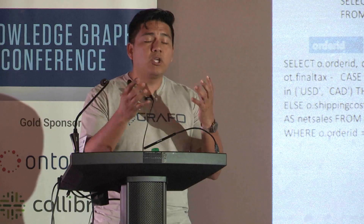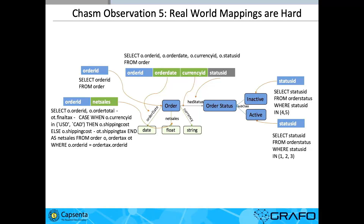Let's assume there's a table called order, and every instance of that table represents the concept of an order. Let's assume there's an attribute called date and currency — simple one-to-one mappings. But you also have to know that values four and five mean inactive, and one, two, three means active. That's written down somewhere — maybe in the database, maybe in the documentation.